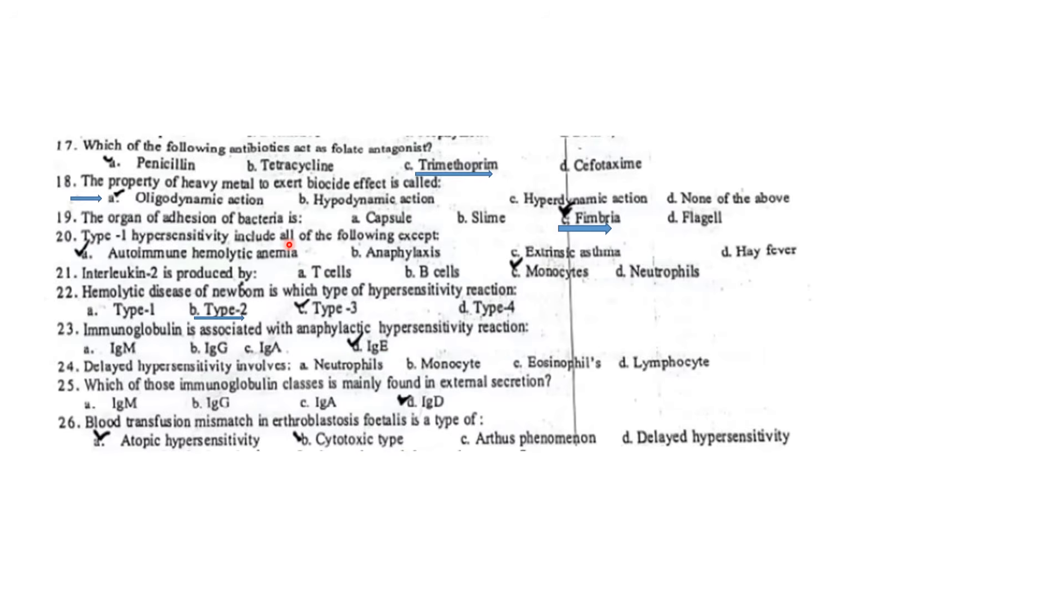Type 1 hypersensitivity includes all of the following except: anaphylaxis, extrinsic asthma, and hay fever are Type 1, but autoimmune hemolytic anemia is not Type 1. Interleukin-2 is produced by T cells. During the production of antibodies, this is not produced by monocytes. These are T cells.